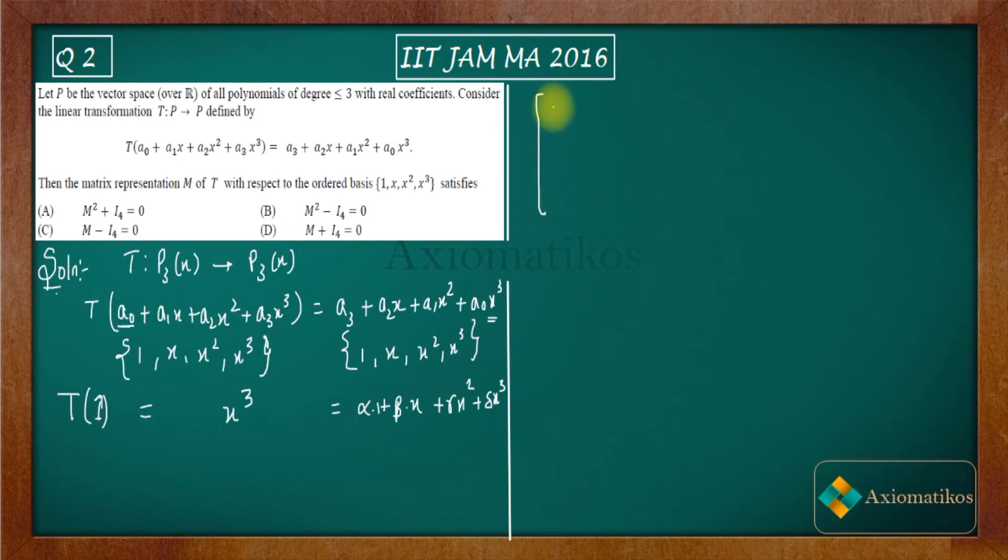So this α, β, γ, δ plays an important role in the matrix. α, β, γ, δ are actually the entries of your column 1. So you have 0, 0, 0, 1 as your entry.